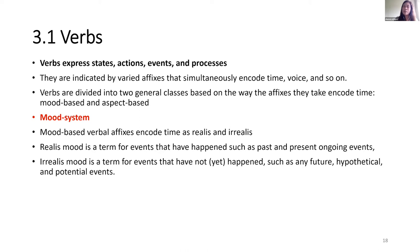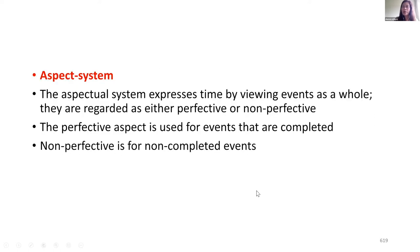The mood-based verbal affixes encode time as realis and irrealis. Realis mood is a term for events that have happened, such as past and present ongoing events. Whereas irrealis mood is a term for events that have not yet happened, such as future, hypothetical, and potential events. The aspect system expresses time by viewing events as a whole, and they are regarded as either perfective or non-perfective. The perfective aspect is used for events that are completed or done, while the non-perfective is for non-completed events.